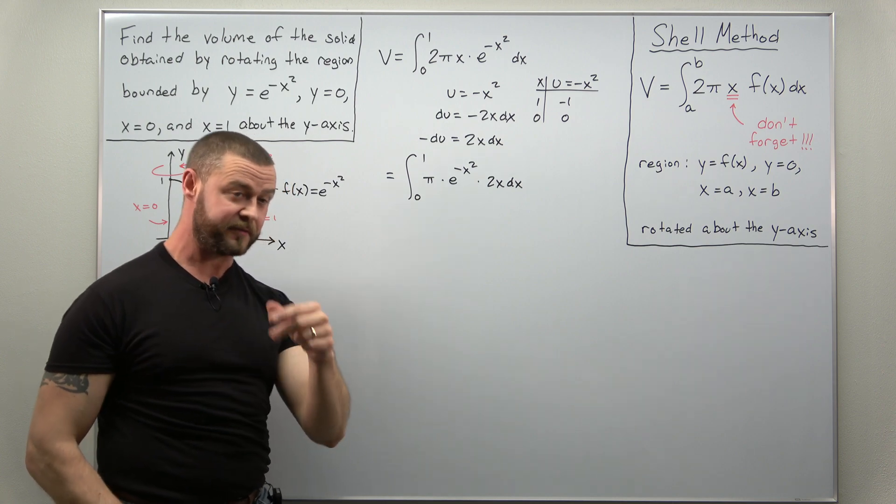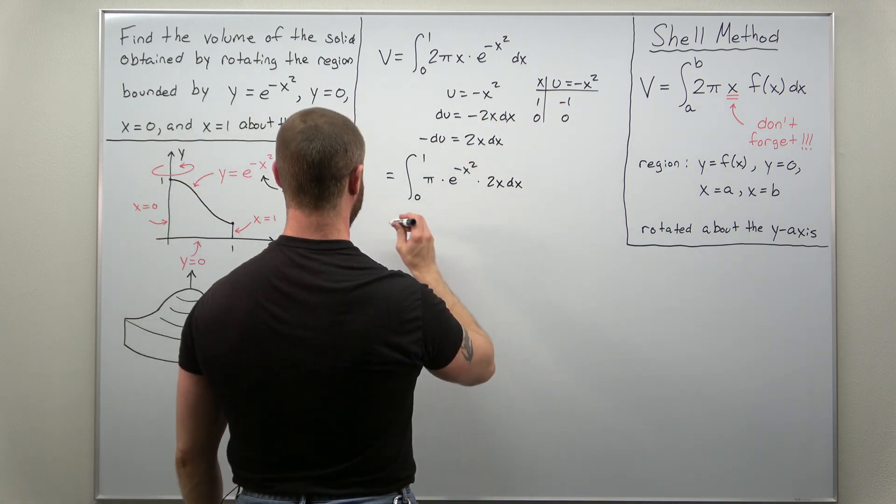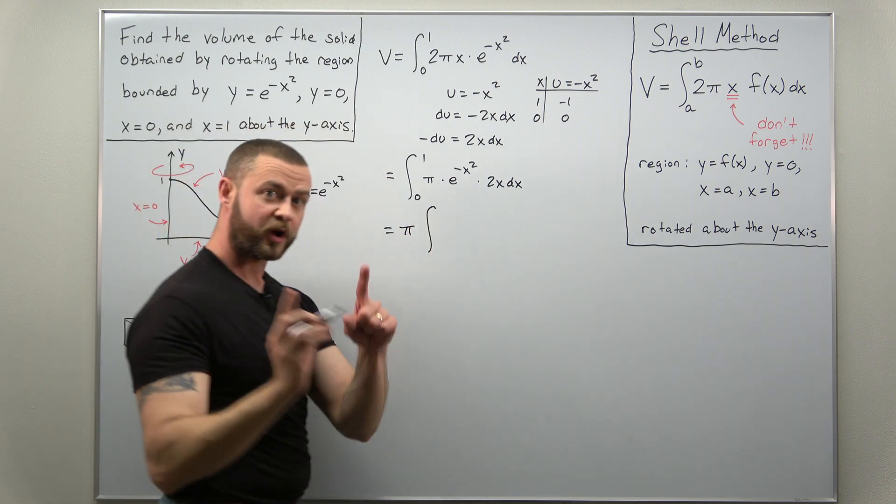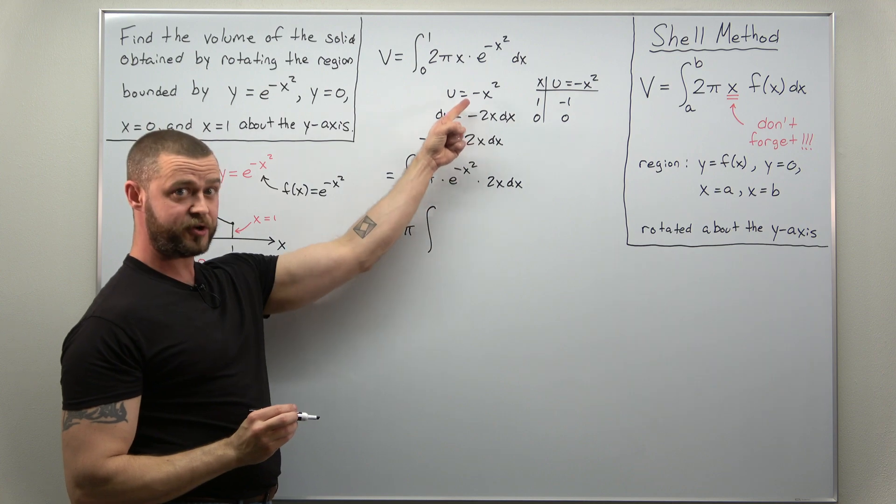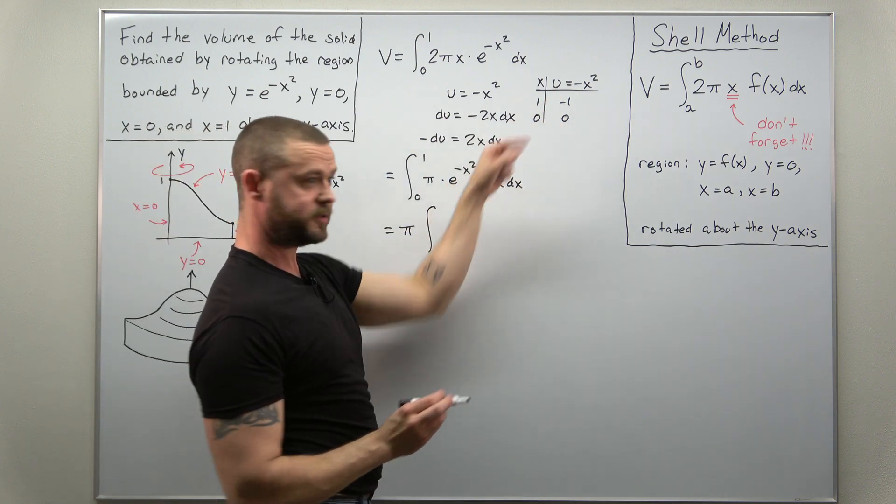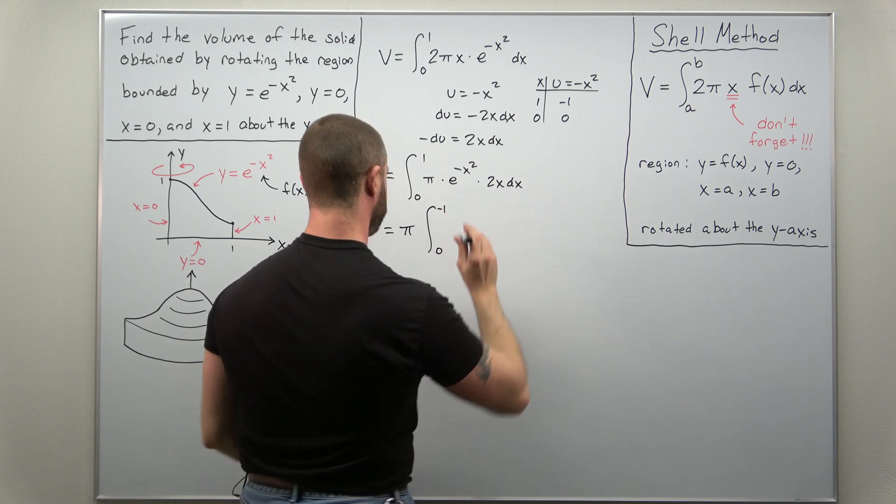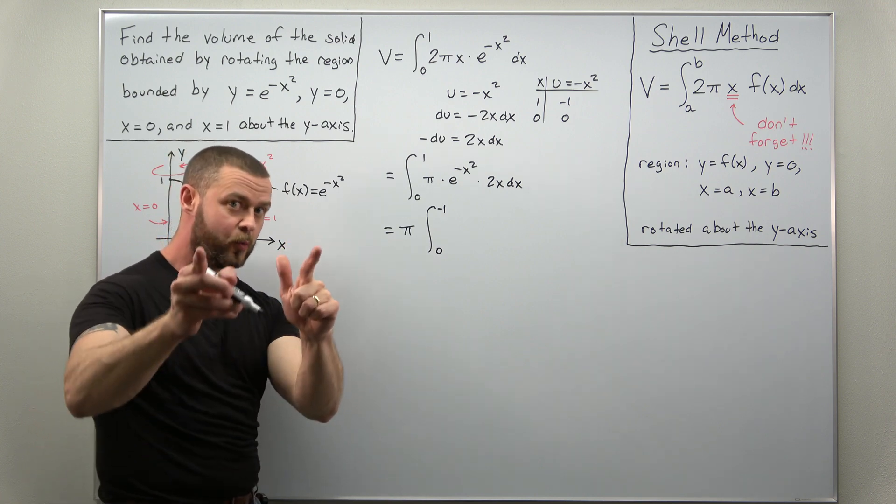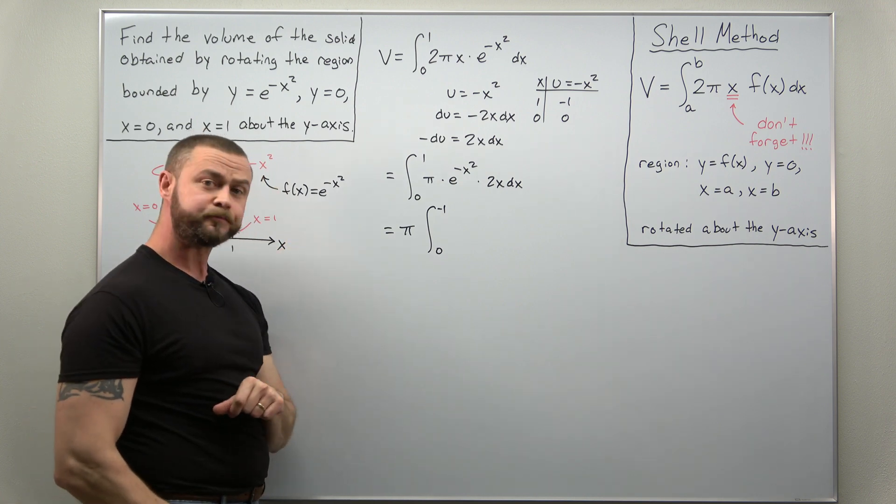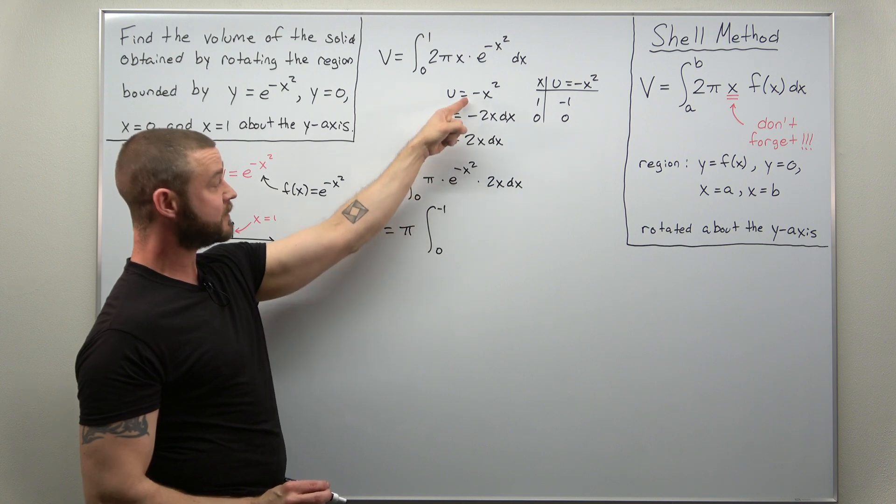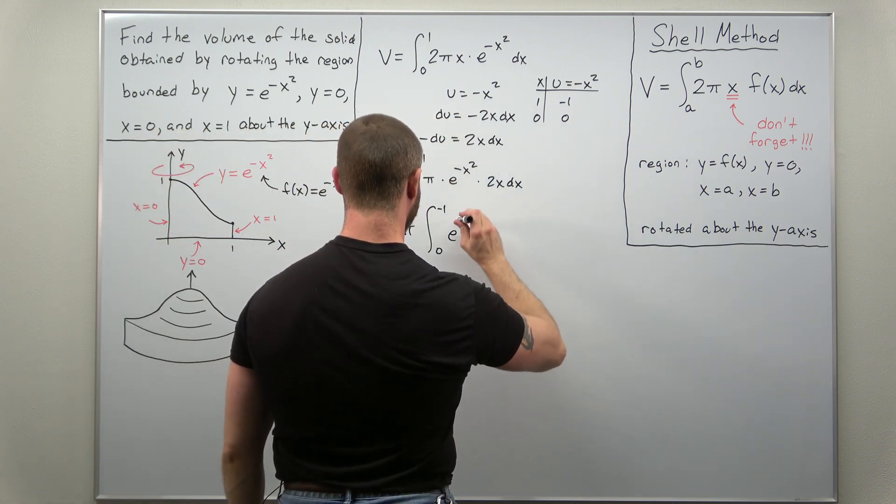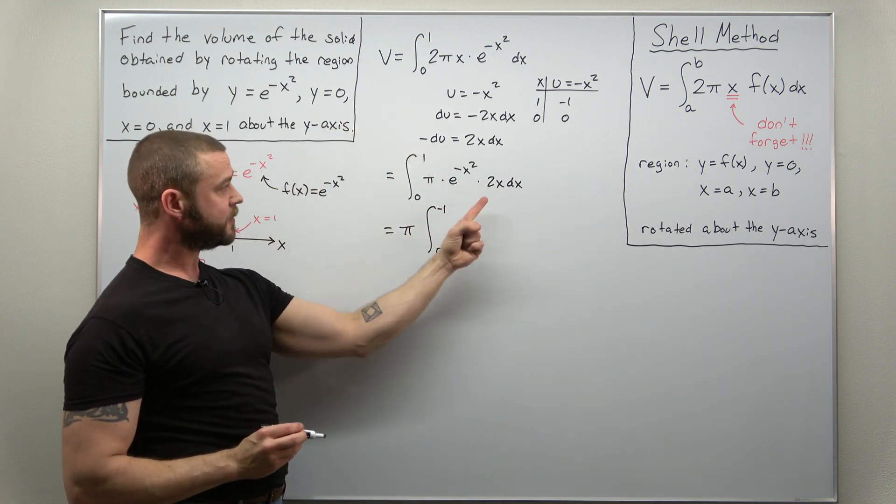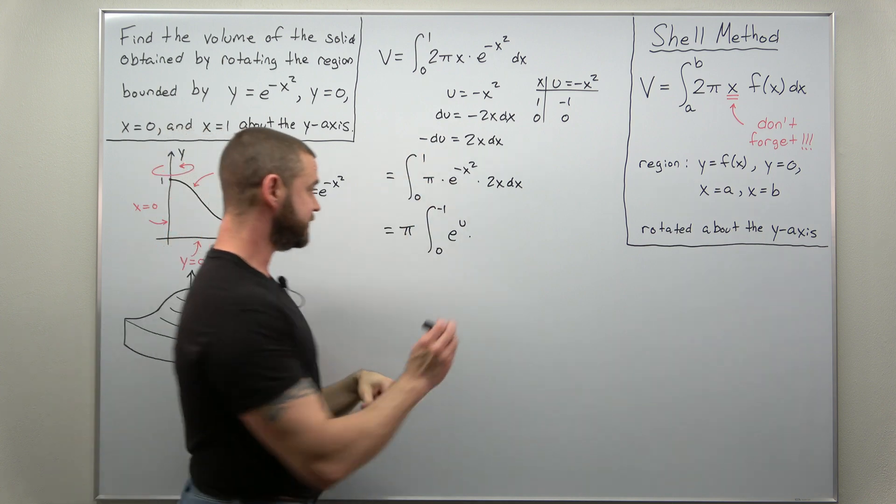Now we should be able to easily convert this. Let's make use of all our substitutions here. I can bring the factor of π out. We're converting from x to u. Your u limits go from 0 to negative 1. If that looks a little bit weird that you have a negative number in the upper limit, we'll deal with that a little bit later. e to the negative x squared, that converts to e to the u. The negative was already part of our substitution. And just be careful here, don't lose that negative. 2x dx is negative du.